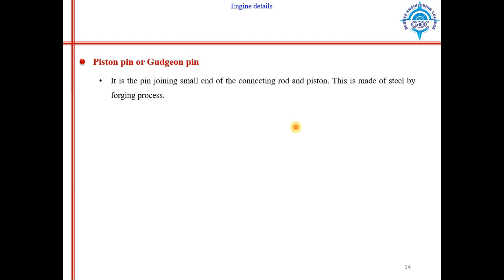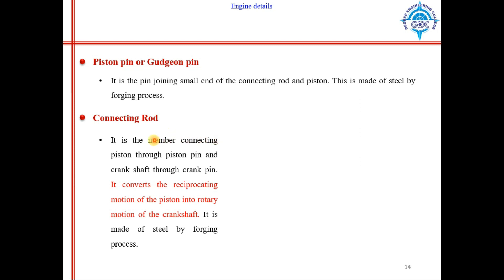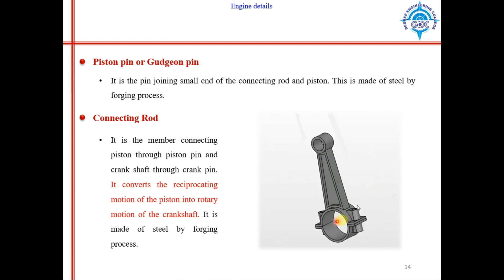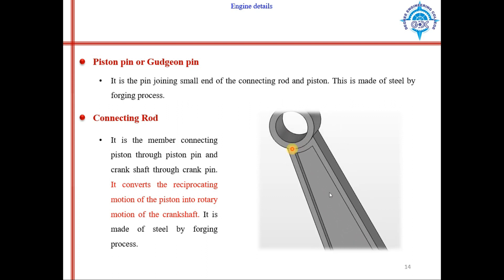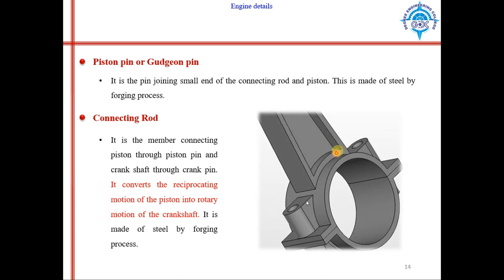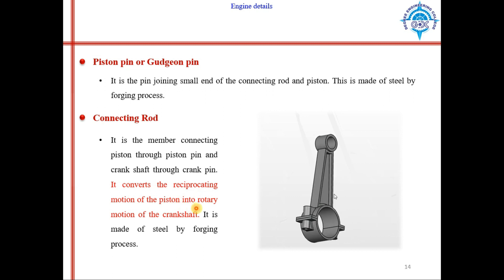The next component is the piston pin or gudgeon pin. It acts as a pin joint between the piston and the connecting rod. It is made of steel by a forging process. The connecting rod is a member connecting the piston pin to the crankshaft crank pin. It converts reciprocating motion of the piston into rotary motion of the crankshaft. The larger end is connected to the crank and the smaller end is connected to the piston, both through pin joints.